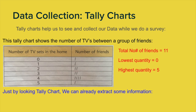We can see that the lowest quantity of televisions in one household is zero, and the highest quantity is five. Now, if one friend had six, like I mentioned earlier, the highest quantity on the chart would have been six — so you go as high and as low as you need to while asking people. There is also a very important piece of information here related to averages: the biggest result is four, meaning four people had four televisions.